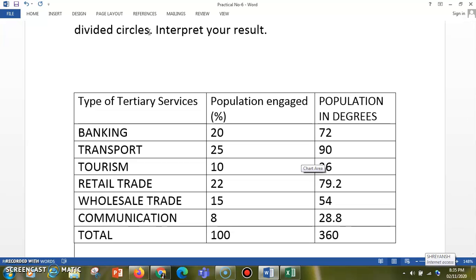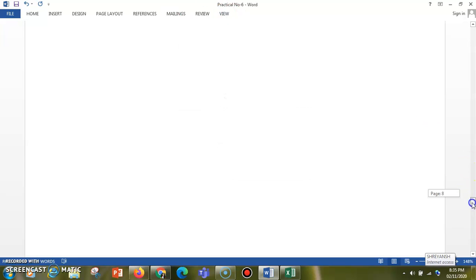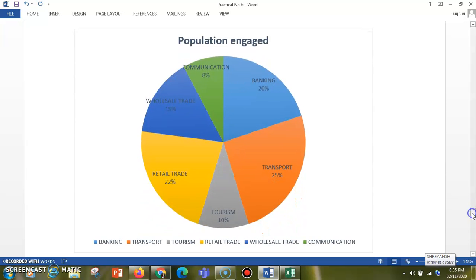After implementing it, the circle which is generated is going to look like that. By this you can conclude that the highest proportion is covered by transportation at 25% and minimum is covered by communication at 8%. This is what you can conclude with the help of a divided circle.